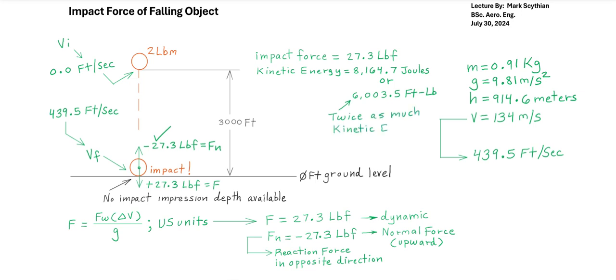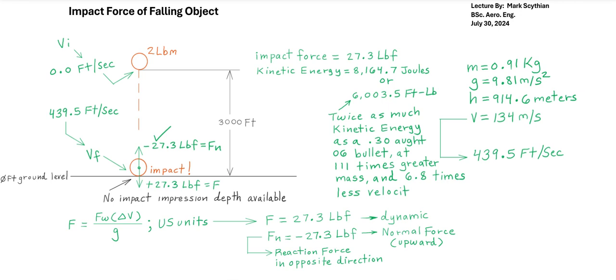This is twice as much kinetic energy as a 30-06 bullet in motion at 111 times greater mass, 2 pounds versus 0.91 kilograms versus 0.0097 kilograms. That's a 150 grain round. This is 111 times greater mass than a 30-06 bullet and 6.8 times less velocity, 439.5 versus 3,000 feet per second.